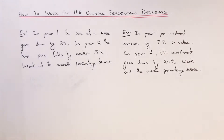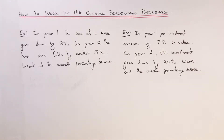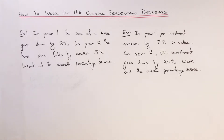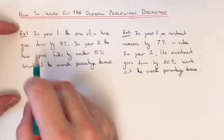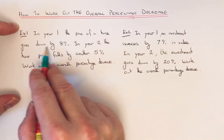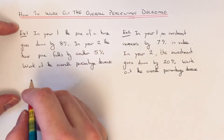Let's have a look at example one. In year one, the price of a house goes down by eight percent. In year two, the house price falls by another five percent. Work out the overall percentage decrease.